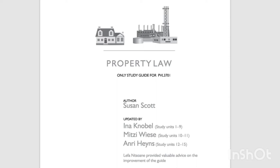In the case of a real right of ownership, the most important entitlements are the legal subject's entitlements to: first, control; second, use and enjoyment; third, burden or encumber with limited real rights such as servitudes or real security rights; fourth, enjoy the fruits; fifth, consume; sixth, alienate (sell and deliver); and seventh, vindicate — that is, claim from whoever is unlawfully in control of the thing.